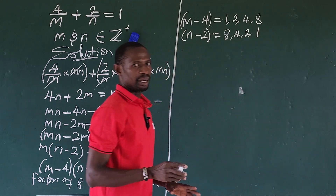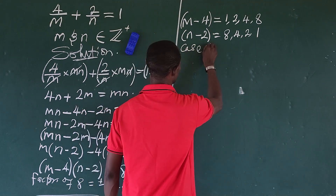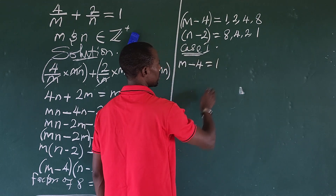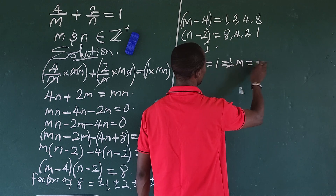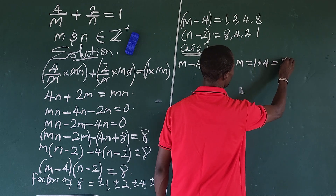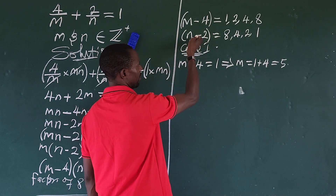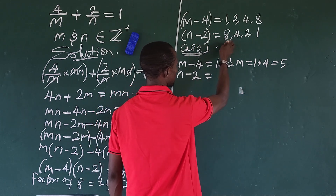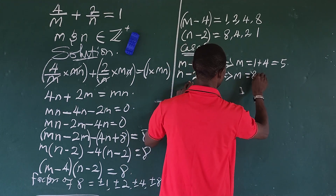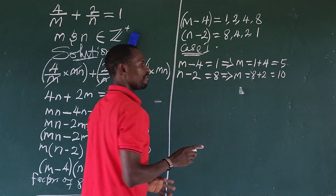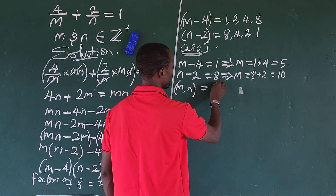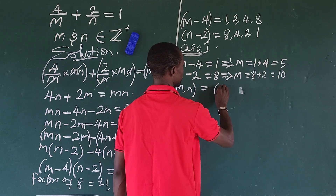Taking the positive factor pairs, we set (m minus 4) equal to one value and (n minus 2) equal to the paired value. Case 1: m minus 4 equals 1, so m equals 1 plus 4 which is 5. And n minus 2 equals 8, so n equals 8 plus 2 which is 10. The first solution pair is (m, n) = (5, 10).